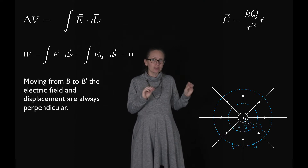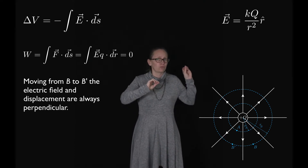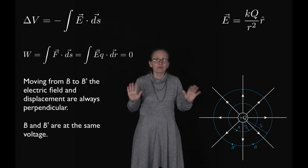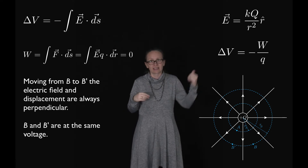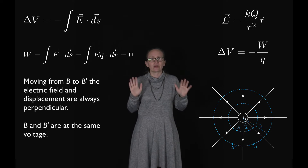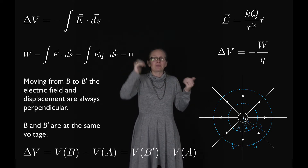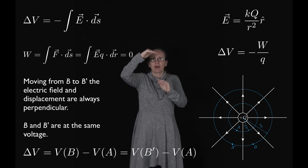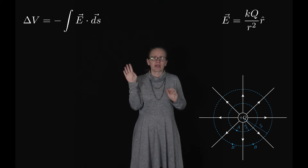Because there is zero electrostatic work to move from B' to B, those two points must be at the same voltage, since the change in potential equals minus the electrostatic work divided by Q. So the voltage between A and B is exactly the same as the voltage between A and B'.